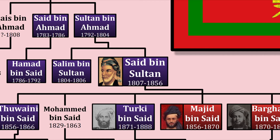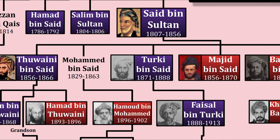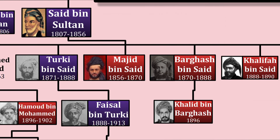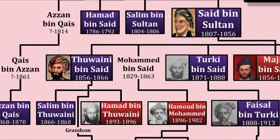Oman was officially split between two sons. His son Thuwaini got the throne of Oman, whereas his brother Majid got the throne of Zanzibar, making them two separate sultanates. From then on, Oman and Zanzibar acted as two distinct places. In fact, even during Thuwaini's reign, Oman faced a financial crisis. However, Zanzibar, which was much wealthier, didn't help them out at all.